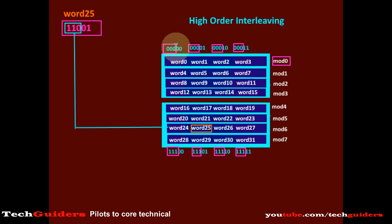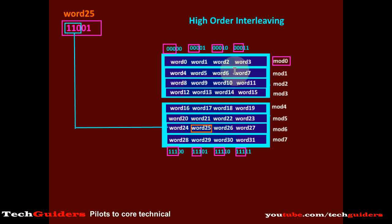Compared to low-order interleaving, the level of parallelism that can be achieved in high-order interleaving is less. Suppose we have a data request for successive words, word 0 to word 7. But word 0 to word 3 are residing on the same memory module, so only after servicing the request for word 0 can we service the request for word 1, then word 2 and so on. But between memory modules we can achieve parallelism — while data transfer for word 0 to word 3 is going on we can simultaneously service the request for word 4 to word 7. So the parallelism depends upon the type of request and how many words are kept in each memory module. Compared to low-order interleaving, the level of parallelism in high-order interleaving is less.